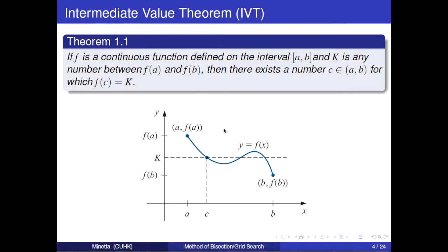To know it clearly, we need to know two theorems. First is intermediate value theorem. If f is a continuous function defined on the interval [a, b] and k is any number between f(a) and f(b), then there exists a number c in interval [a, b] for which f(c) equals k.